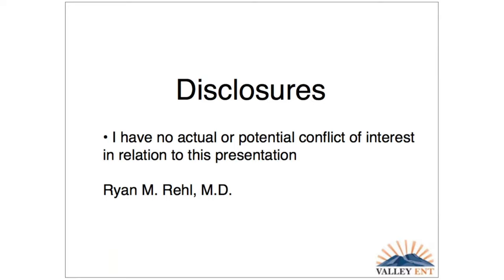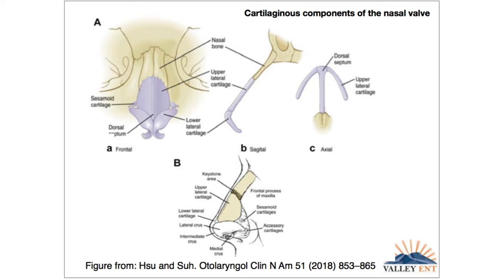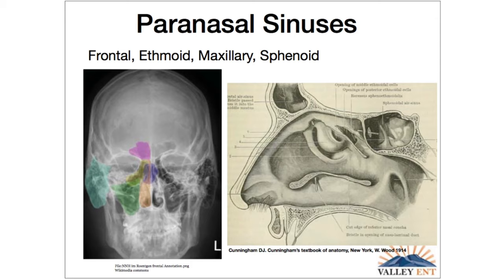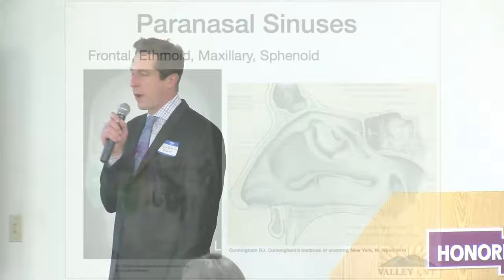Any component of nasal anatomy can cause obstruction. The nasal valve is literally the entrance to the nose and is often overlooked. The nasal septum is the vertical midline wall that separates the nose into two sides. The turbinates or nasal concae are scroll-like bony structures that hang off the sidewall of the nose. The paranasal sinuses have pathology that can cause congestion. The choana is the posterior opening within the nasal cavity, and the nasopharynx can also have pathology that causes obstruction.